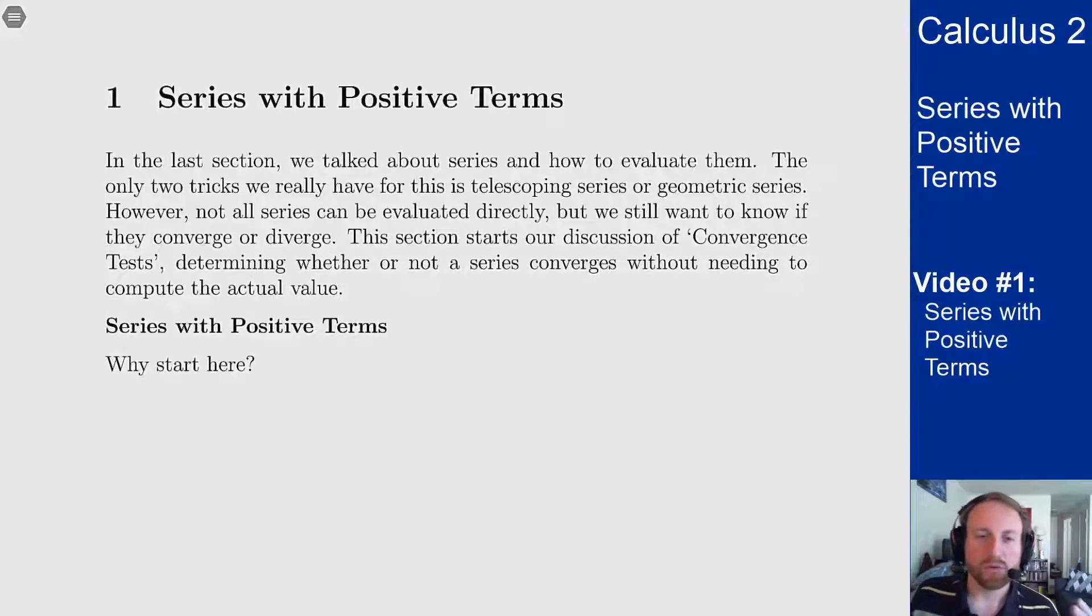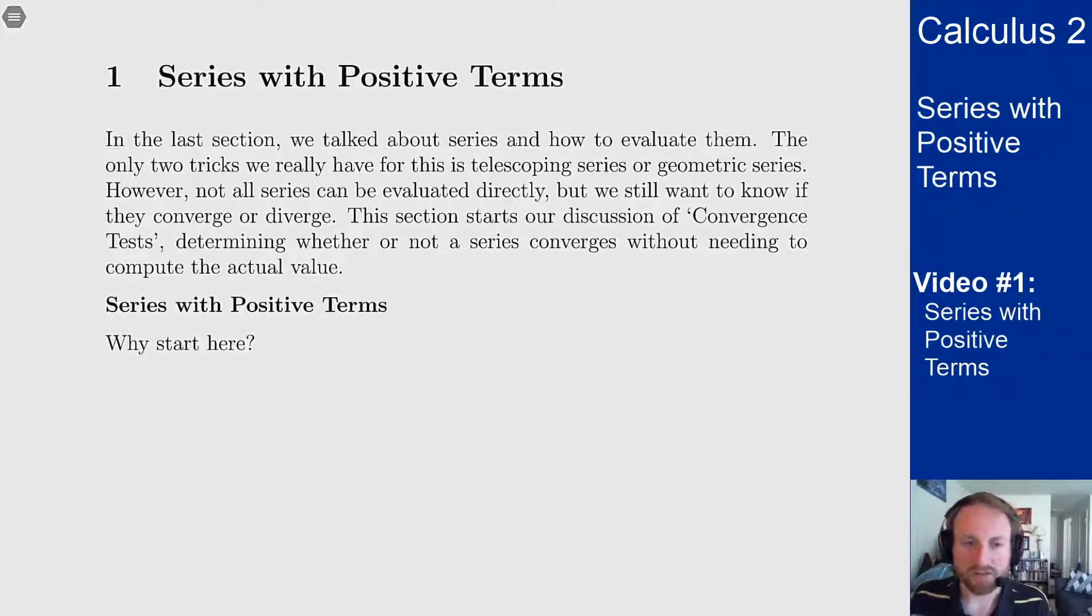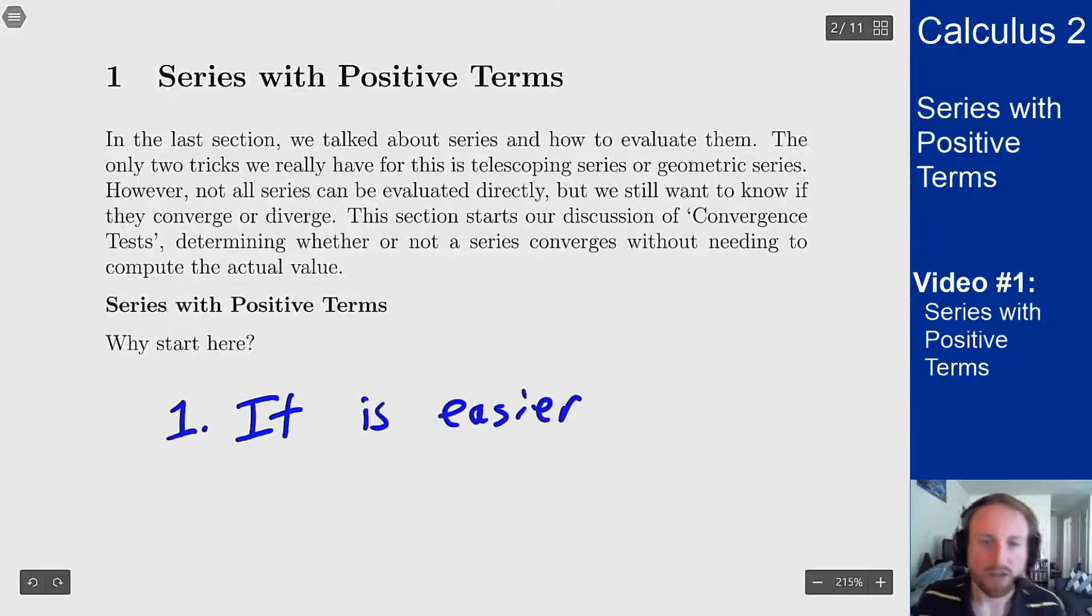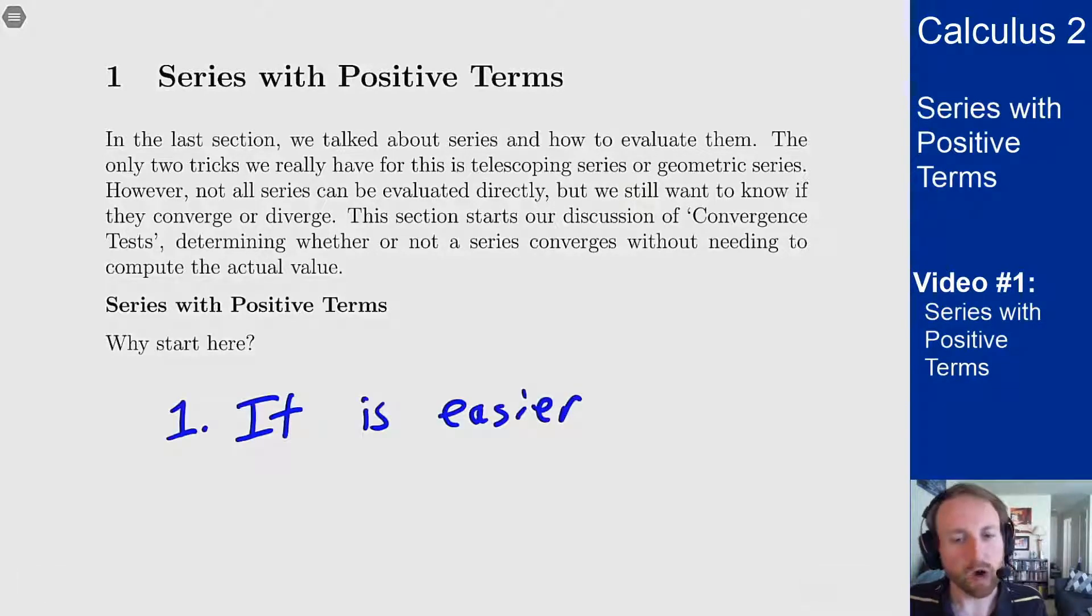So we're starting with series of positive terms to do this. You can do this for all series and we'll get there eventually, but we're starting with positive terms. And there's two main reasons why we start here. The first is simply that it's easier. As we'll see in a bit, the fact that we know every term is positive means we can use some nice results about sequences and their limits to make this a lot easier to do.